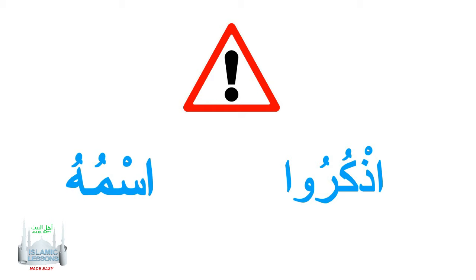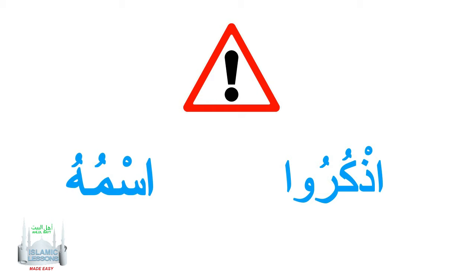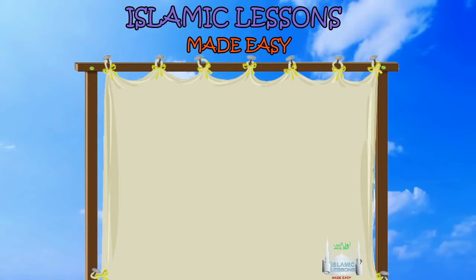Just a precaution: don't do Qalqala on other letters. For example, you don't say 'udh kuru' with a bounce. You say 'udh kuru,' not 'udh' with a bounce. Or here it says 'ismuhu,' not 'ismuhu' as if you're bouncing the letter.